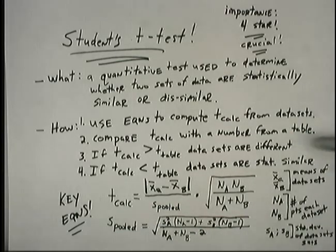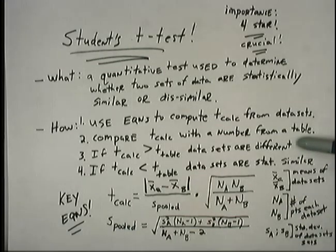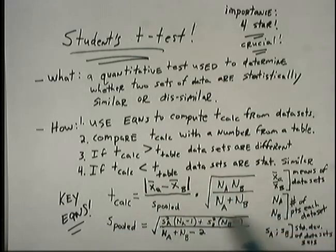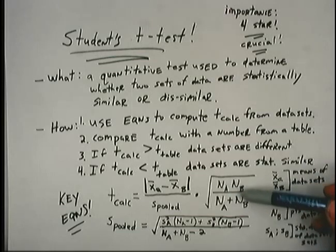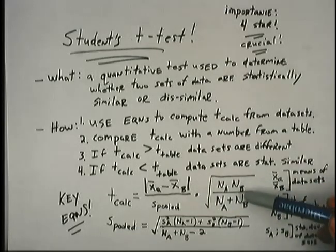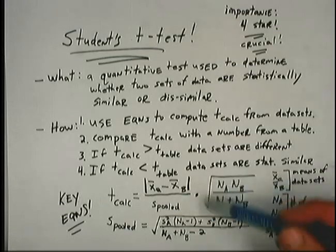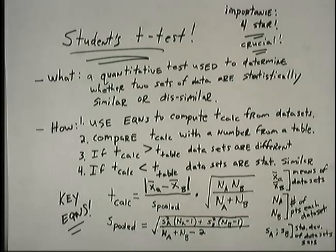If you forget whether T-Calc has to be greater or smaller than the tabular value, just think about it: the bigger the gap between the two means, the bigger T-Calc will be, and the more likely the sets are different. The square root term — the product of the N's divided by the sum of the N's — I think of as a confidence term. If N is very small, it won't be very big, but if N is huge, it increases. The higher the number of replicate analyses, the more confident you are in your result.